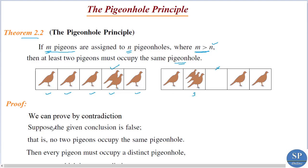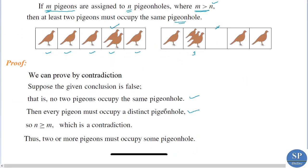Proof by contradiction. Suppose the given conclusion is false — that is, no two pigeons occupy the same pigeonhole. Then every pigeon must occupy a distinct pigeonhole, so at most one pigeon occupies each pigeonhole. This implies n is greater than or equal to m, which is a contradiction.